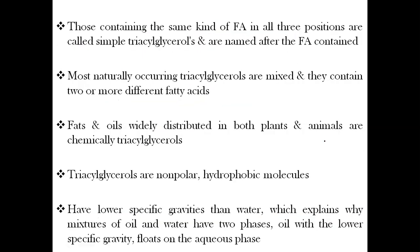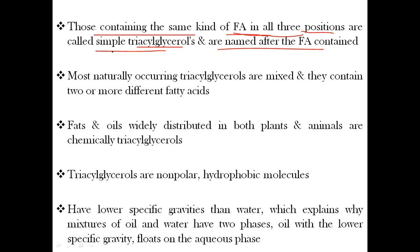Triacylglycerols containing the same kind of fatty acids in all three positions are called simple triacylglycerols. They are named after the fatty acid they contain. Those triacylglycerols which contain all the same kinds of fatty acids are known as simple triacylglycerols, and these are named according to the specific type of fatty acid they contain.